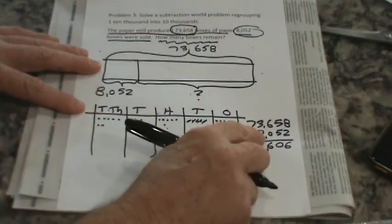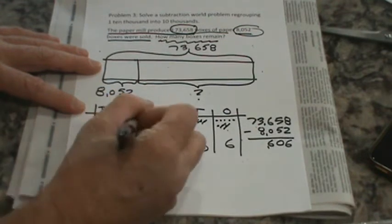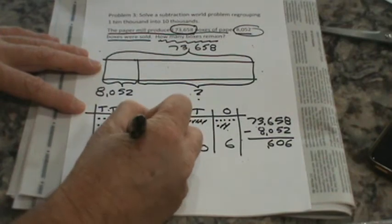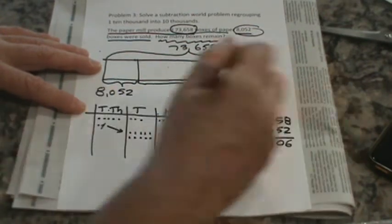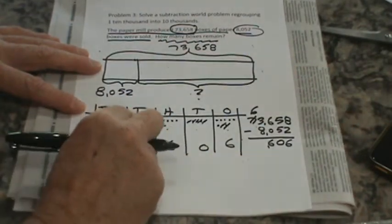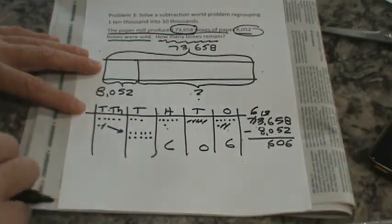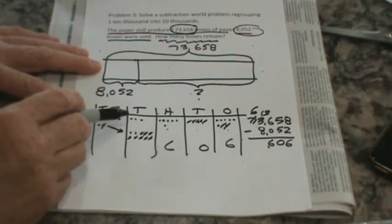Now here we run into some trouble. I can't take eight thousand away from three thousand, so I'm going to take a ten thousand, take it over here - one, two, three, four, five, six, seven, eight, nine, ten. Now I'm going to have six ten thousands and thirteen thousands. Let's take away eight. I'm left with five.